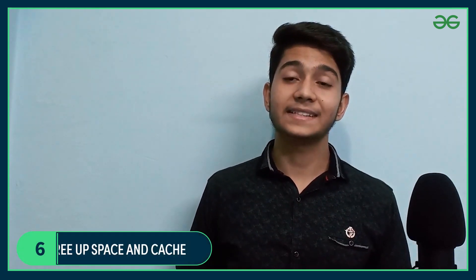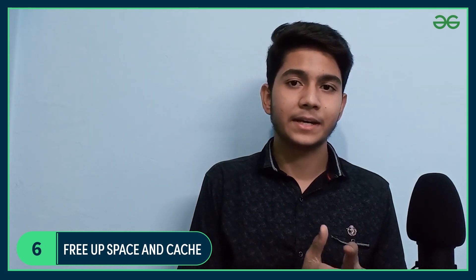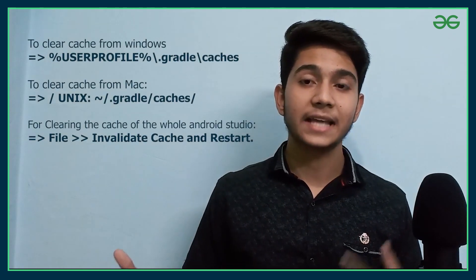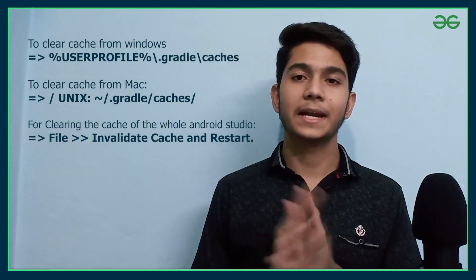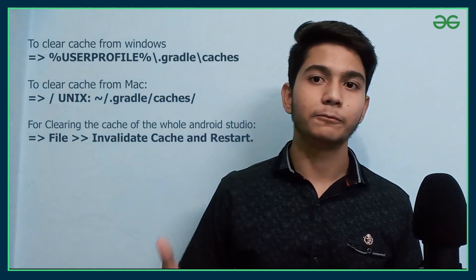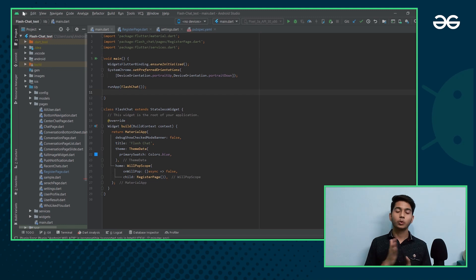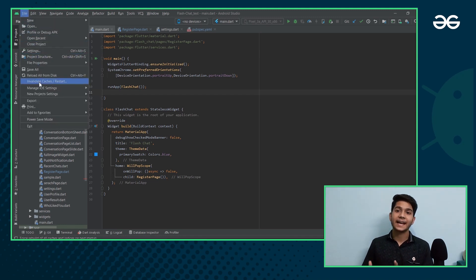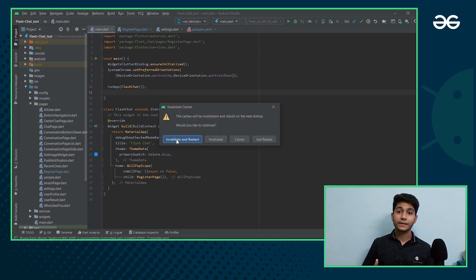Sixth, we have free up space and cache. Cache is a temporary file that the system collects in order to make future processes load faster. Android Studio stores cache in a Gradle cache form. In order to clear the cache for Windows and Mac, the commands are being displayed on the screen, so do note them down for your future reference. To clear the cache for the whole Android system, open Android Studio, then go to Files and select Invalidate Cache and Restart. Freeing up all this space and cache really helps.